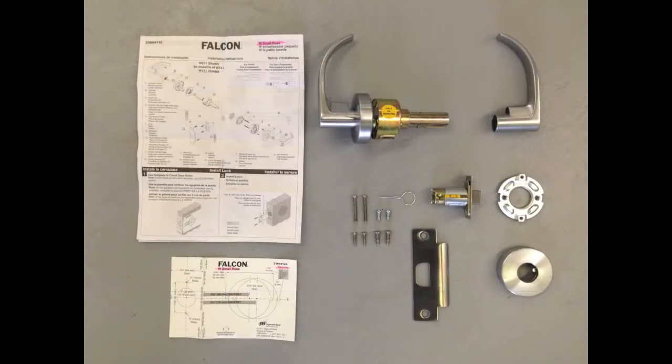In the box, you'll find the chassis and outside lever, inside lever, latch, anti-rotation plate, rose, strike, fasteners, pin wrench, template, and instruction sheet.